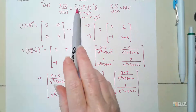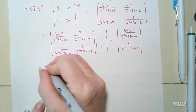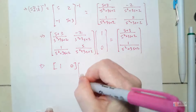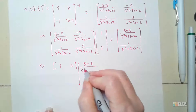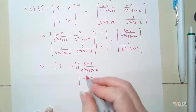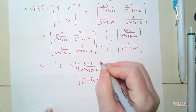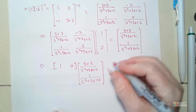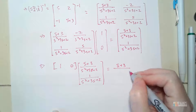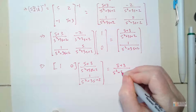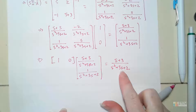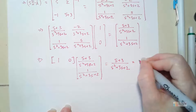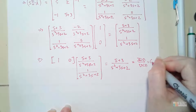Now all I have to do is multiply C by that result. C is the row vector [1, 0], so we get 1 times the top element plus 0 times the bottom element, leaving us with the top one. So our transfer function G(S) = X(S)/U(S) is (S+3) over (S²+3S+2).